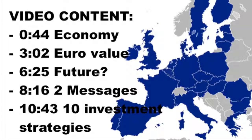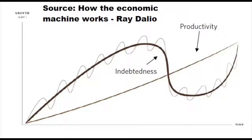These are the video topics: the European economy, the euro, what can happen in the future, and then 10 investment strategies. Let's start immediately with the economy. There is a simple fundamental formula for what to expect when it comes to economic growth, strength, and future potential. The source is how the economic machine works from Ray Dalio and Bridgewater.